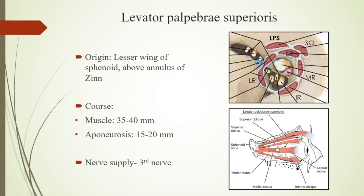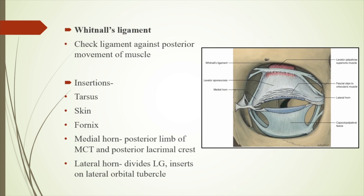The levator palpebrae superioris originates above the annulus of Zinn, along with the superior rectus, at the lesser wing of the sphenoid. It has two parts: the muscular part going 35 to 40 mm, and the aponeurotic part going down vertically for 15 to 20 mm. The Whitnall's ligament is a fibrous check ligament that acts against the posterior movement of the levator. The levator inserts at five insertions: the tarsus, the skin forming the crease, the fornix, the medial horn inserting into the MCT and posterior lacrimal crest, and the lateral horn, which further divides the lacrimal gland and inserts into the lateral orbital tubercle.